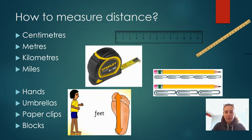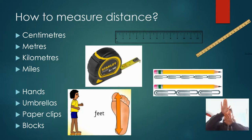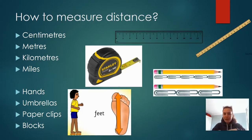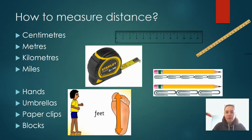But there are other different ways to measure, and these are called non-standard ways of measuring. So you can measure things in your hands — you can see how many hands it is. You could use your feet, you could use umbrellas, paperclips, or blocks. And those are non-standard ways of measuring, and that's what we are also going to look at today.